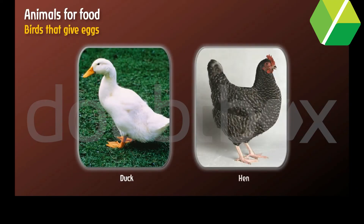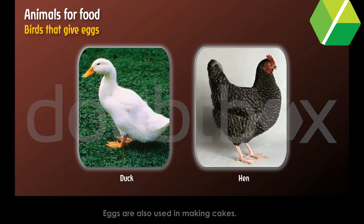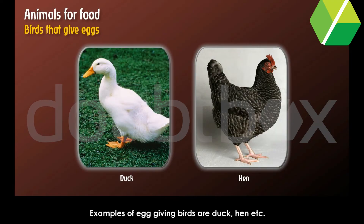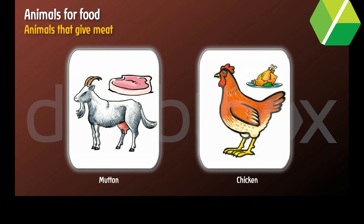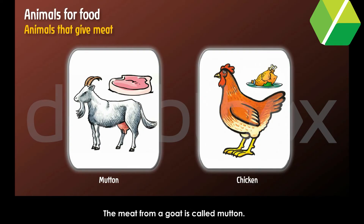Birds that give eggs. Eggs are nutritious food and are also used in making cakes. Examples of egg-giving birds are duck and hen. Animals that give meat. Persons who eat meat are called non-vegetarians. The meat from a goat is called mutton, and the meat from a young hen or cock is called chicken.